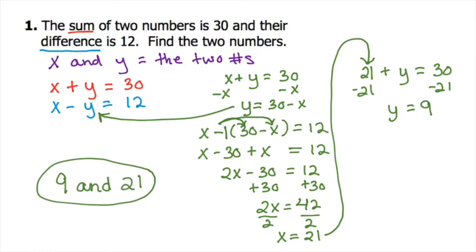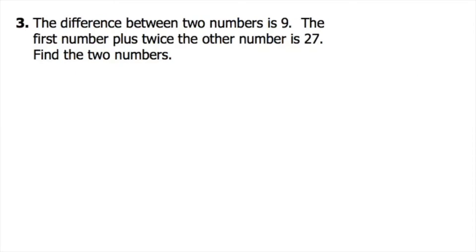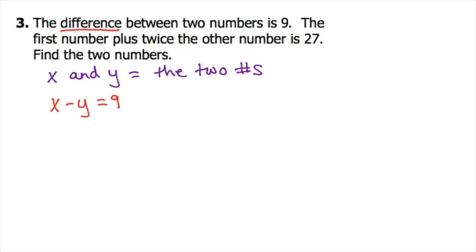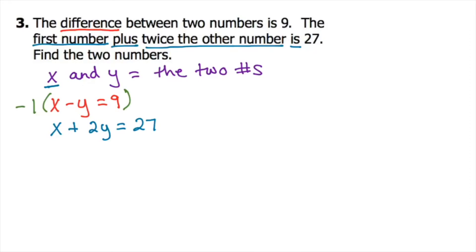So the two numbers are 9 and 21. This isn't an ordered pair — it's just asking for those two numbers, so we write them separately: 9 and 21. For number three: the difference between two numbers is 9, and the second sentence says x plus twice the other number equals 27. So x and y again represent the two numbers, and the difference gives x minus y equals 9, while the second sentence gives x plus 2y equals 27. Now we have our two equations and we can solve — I'm going to use elimination on this one.